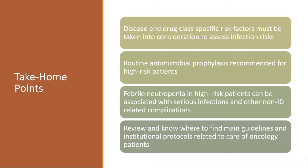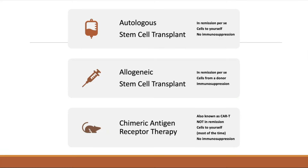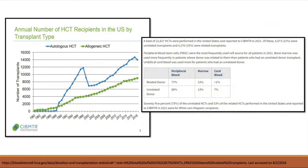Handing over to Dr. Baluch. The rest of the lecture covers three buckets: autologous transplant (cells from yourself), allogeneic transplant (someone else's cells), and CAR-T (traditionally your own cells, other than certain trials). For allogeneic transplant, you should be in remission; for autologous, you should theoretically be in remission; for CAR-T, patients are typically not in remission — they often have significant disease everywhere. The numbers of people needing allos and autos continues to grow.